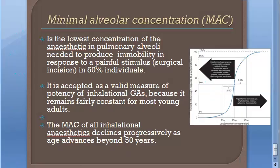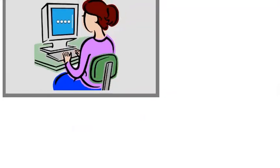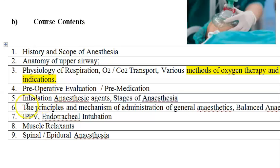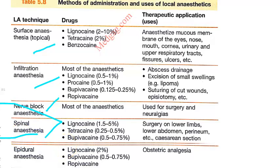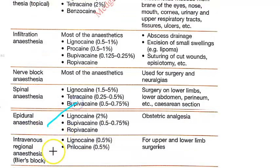You should know terminologies like minimum alveolar concentration. Then the principles and mechanism of administration of general anesthetics. For local anesthesia there are many techniques: surface anesthesia, topical, infiltration anesthesia, nerve block anesthesia, spinal anesthesia, epidural anesthesia, and intravenous regional anesthesia.